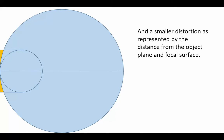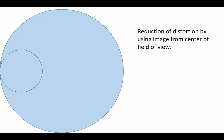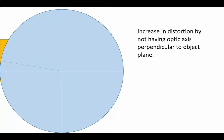Therefore, there will be less distortion in the video. You can also reduce the distortion by using the image from the center of the field of view, as you can see in this very small area here, where the field of view for the larger focal length lens has been reduced. You can see an increase in distortion by not having the optic axis perpendicular to the object's motion.